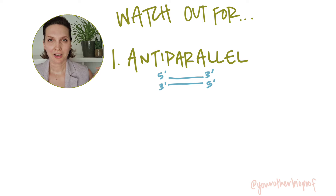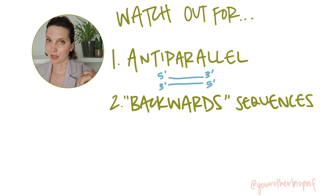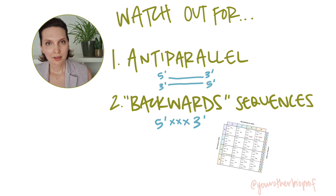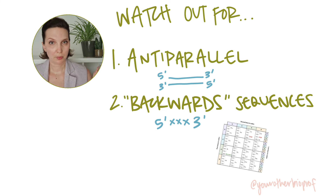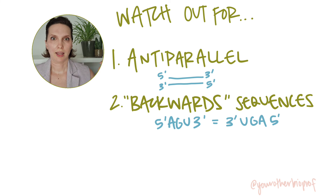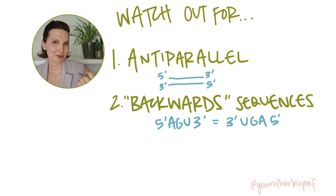The second is to be aware of sort of backward sequences. We typically write codons five prime to three prime — that's how you'll see them in the codon table — but sequences can be written in a reverse direction. So keep in mind that a sequence like five prime AGU three prime is the same sequence as three prime UGA five prime. Depending on how generous your professor is being with the sequences on an exam, you may have to flip some things around.